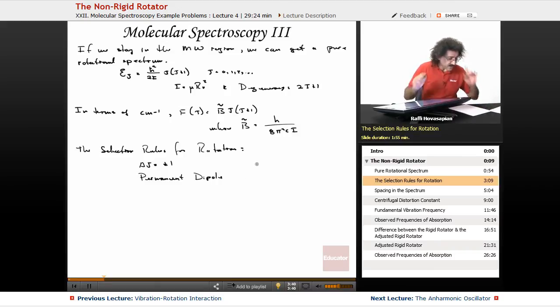The frequencies that we observe in the rotational spectrum are the upper minus the lower. So it's F(J+1) minus F(J).